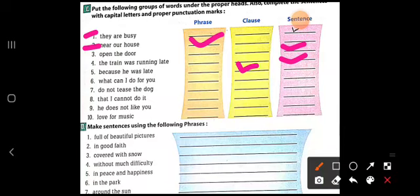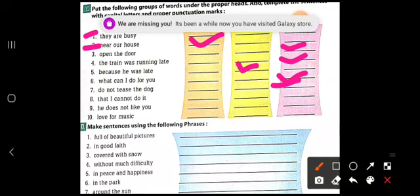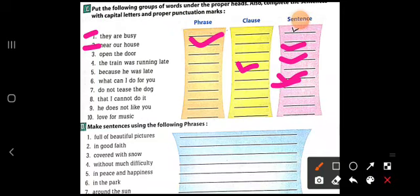What can I do for you? It's a question. So, it is a sentence. Don't tease the dog. Yeh bhi aapko complete idea de raha hai. That I cannot do it. Ki main yeh nahi kar paya. Toh, it's a dependent clause. Then, he does not like you. It's a full sentence. Love for music. It's not giving complete meaning. So, it is a phrase.